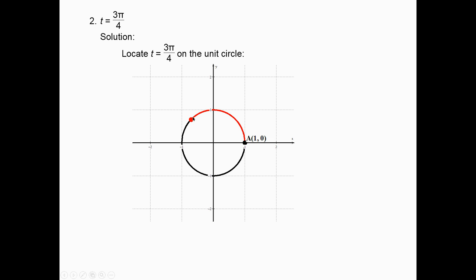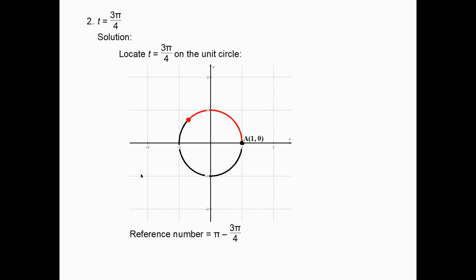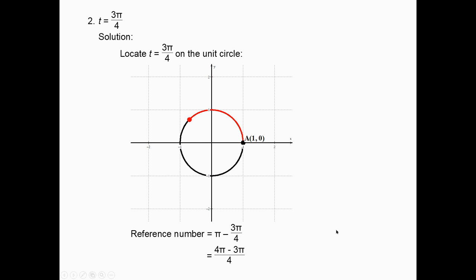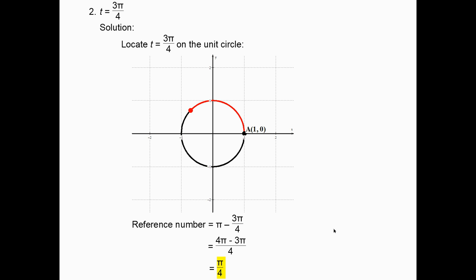For t = 3π/4: π/2 (= 2π/4) is one quadrant, and 3π/4 is past π/2 but less than π, so we're in quadrant 2. The reference number is the gap from 3π/4 to π: π − 3π/4 = 4π/4 − 3π/4 = π/4. So the reference number is π/4. Remember the key values: 0, π/2, π, 3π/2, 2π, and continuing: 5π/2, 3π, and so on.